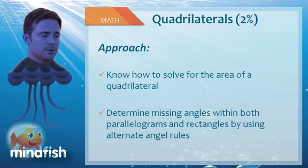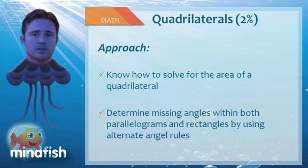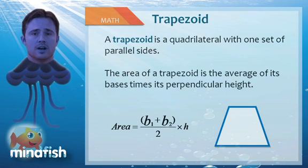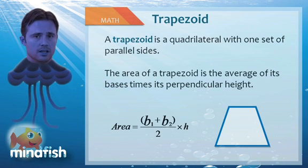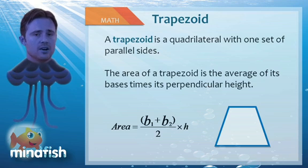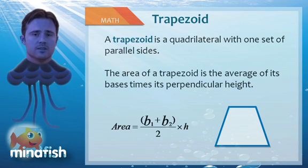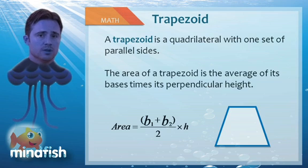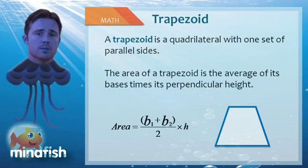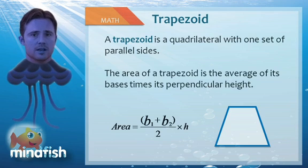The first type of quadrilateral I want to introduce you to is the trapezoid. Trapezoids have one set of parallel sides. As a result, the area of a trapezoid is probably the most complicated area equation, and is given by base 1 plus base 2 over 2, times the height. Or you can think about it as the average of the bases times the height.